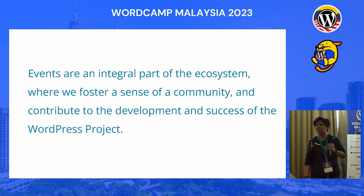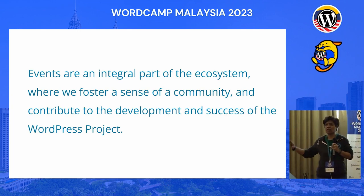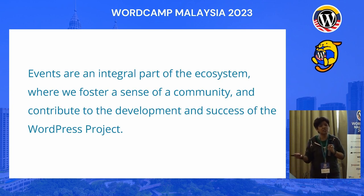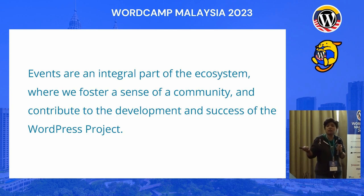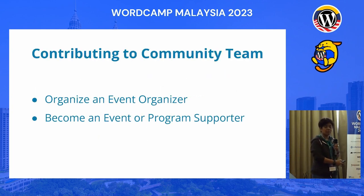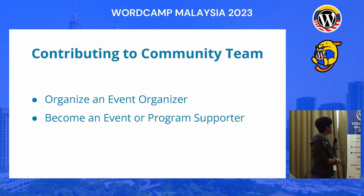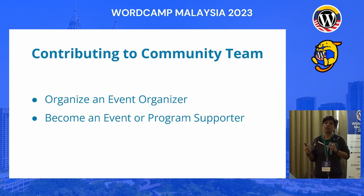We can't just say WordPress is not safe, or question what Gutenberg is and why we're using it. You can actually have a say, but you just have to be part of the community. You have the space to share your concerns, your ideas, your excitement, your dreams. That is part of the community team project. Anybody who attended contributor day yesterday heard that we have 22 teams. The last team is actually sustainability — we do have a sustainability team in the WordPress.org project.